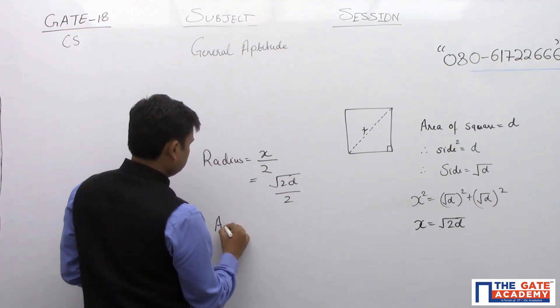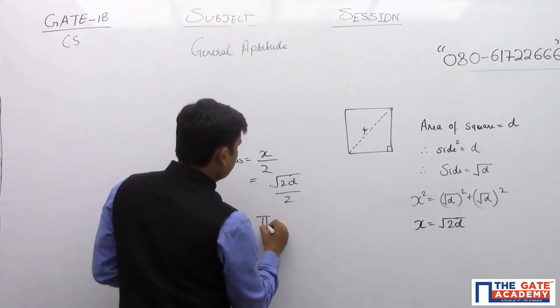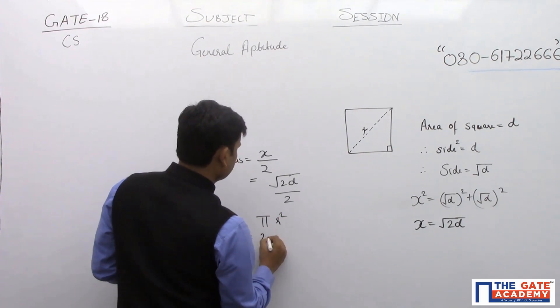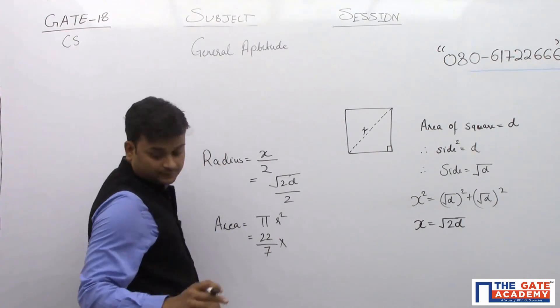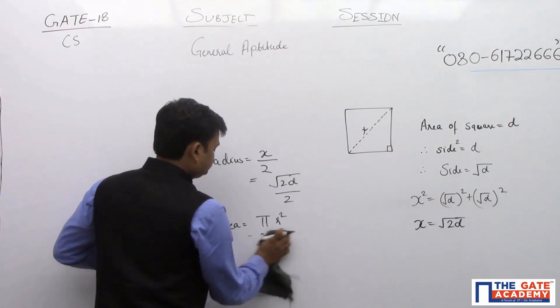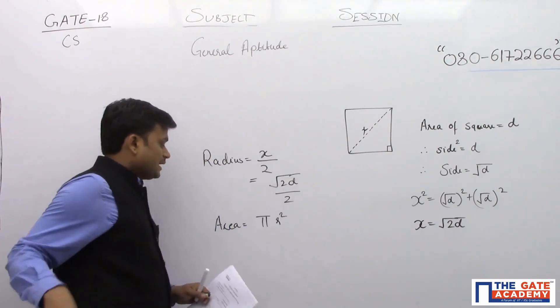So area of the circle will be pi R square, which is 22 by 7, I'm sorry, 22 by 7 is not required here. So pi R square, the area of the circle is pi R square.